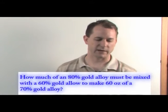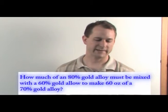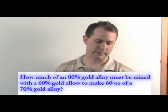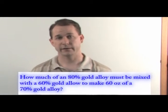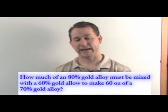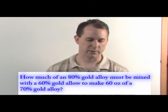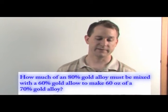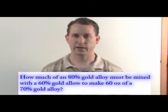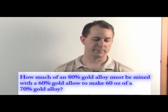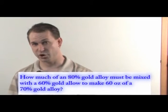How much of an 80% gold alloy must be mixed with a 60% gold alloy to make 60 ounces of a 70% gold alloy? This is an alloy problem — an alloy is a mixture of metals. You're taking an 80% pure gold alloy and mixing it with a less pure 60% gold alloy, and ending up with something in the middle: 70% gold.